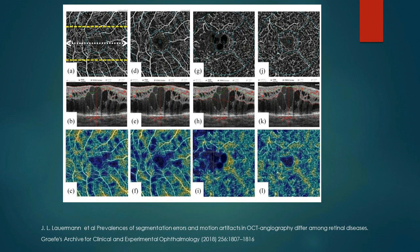This is another image from a publication of a patient with diabetic macular edema. You can see the large amount of diabetic macular edema and large retinal cysts, which can cause mislabeling and segmentation errors in OCTA slabs. As we correct the segmentation errors across the panels from left to right, you can see the flow deficit area keeps on reducing.